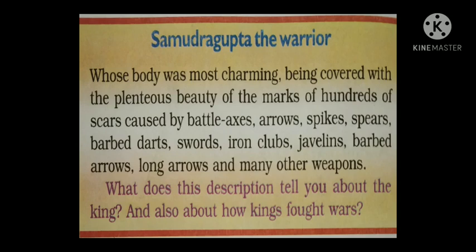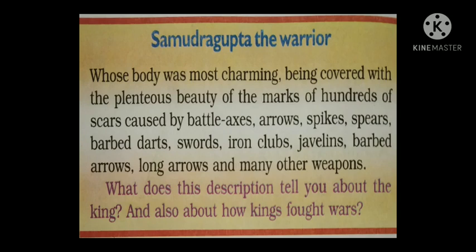Harishena also tells us Samudragupta's policies towards these rulers. So, what are the different kinds of rulers? They are: rulers of Aryavarta, rulers of Dakshinapatha, the inner circle of neighboring states, and the rulers of outlying areas. Let's discuss each of these in detail.